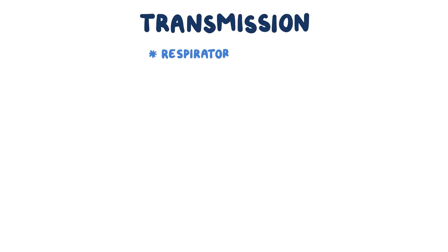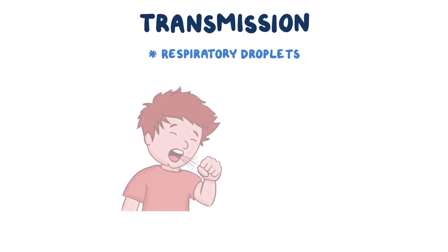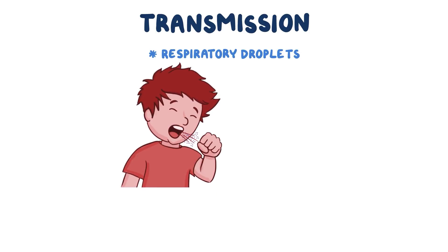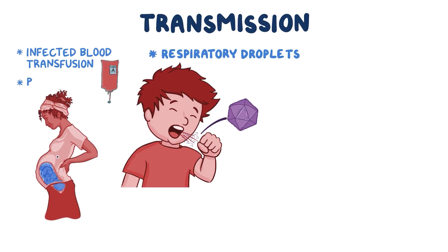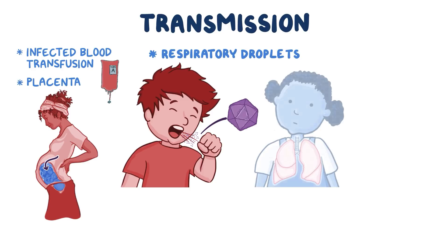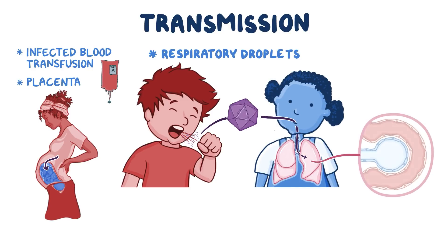Parvovirus B19 is primarily transmitted by respiratory droplets when someone coughs or sneezes. You can also catch it via an infected blood transfusion, and a pregnant female can also transmit it through the placenta to her unborn child. Although the virus first enters cells through the respiratory tract by binding to receptors on host cells, it does not replicate in them.